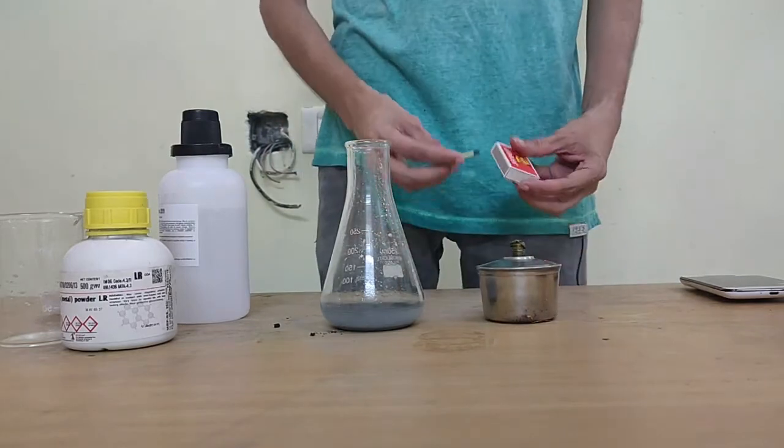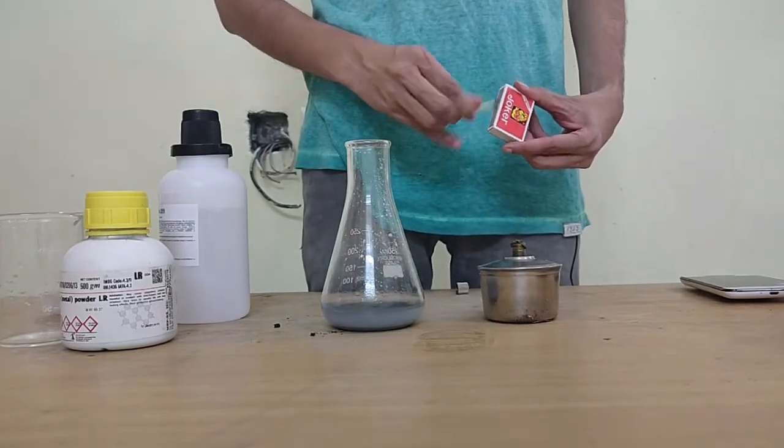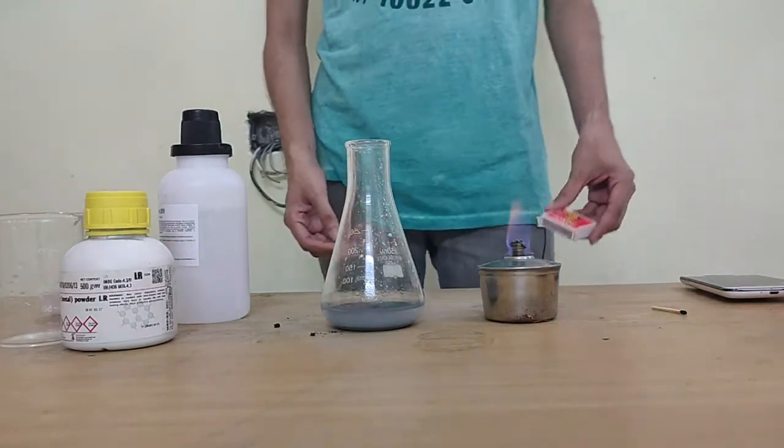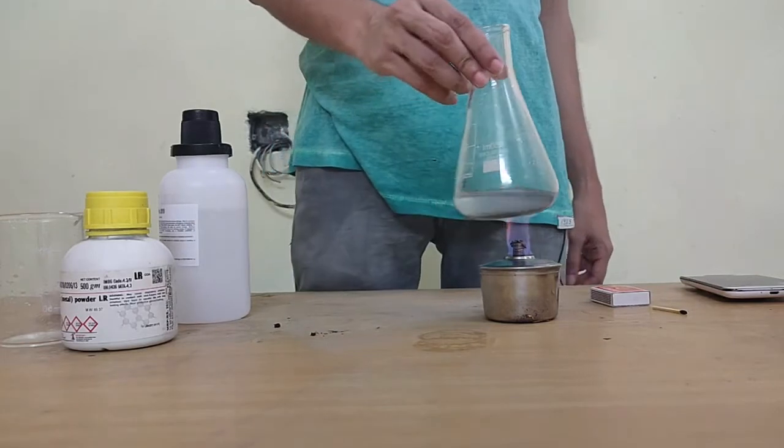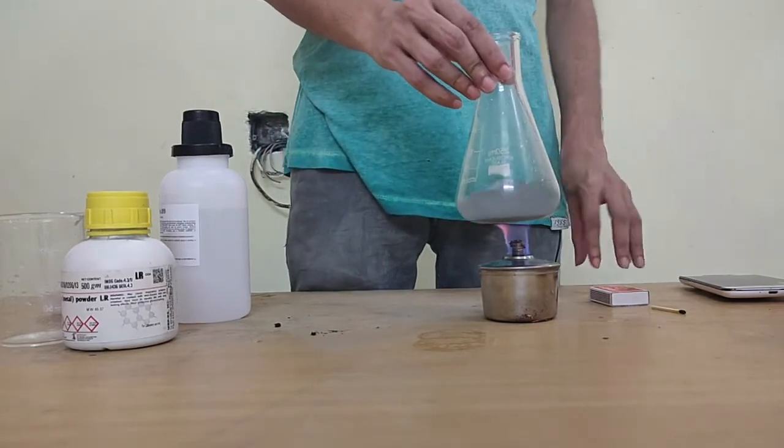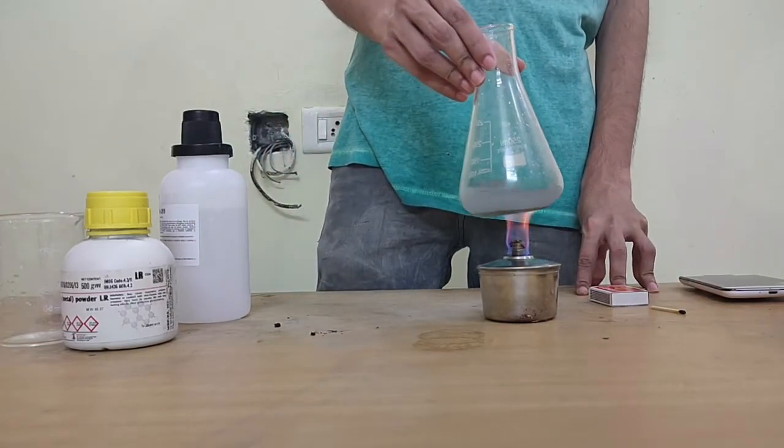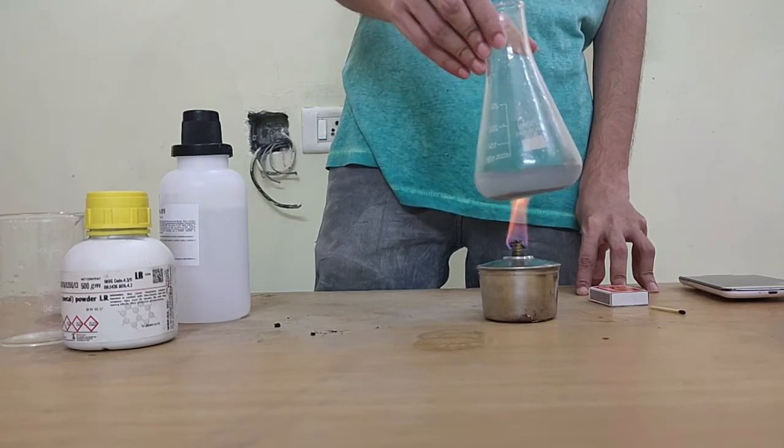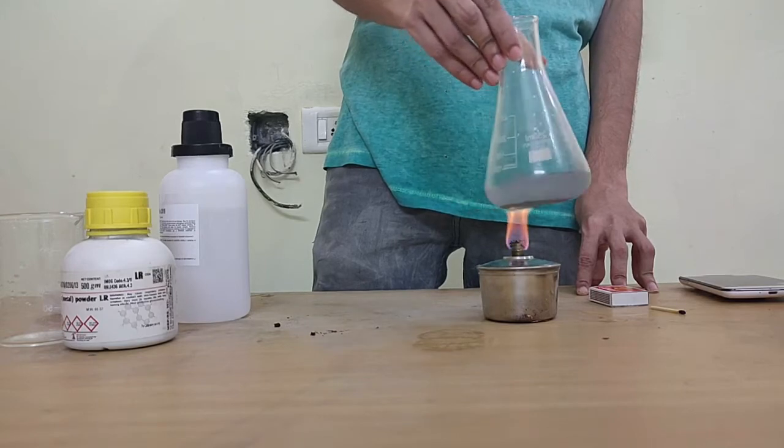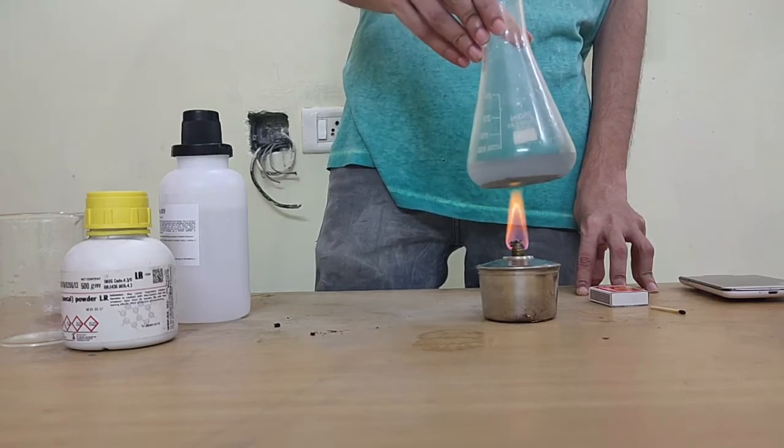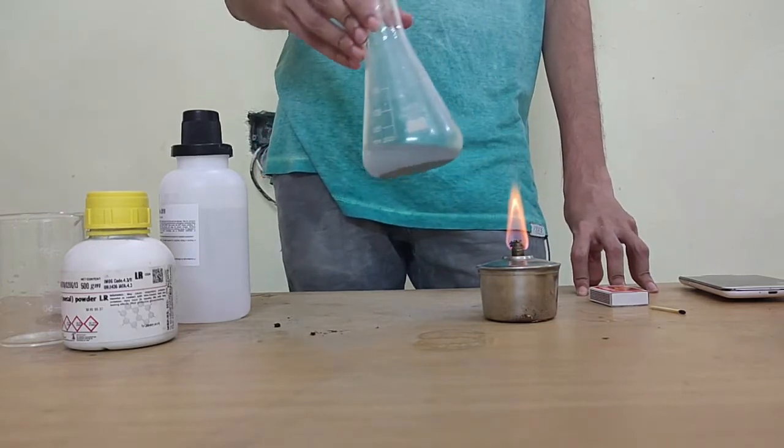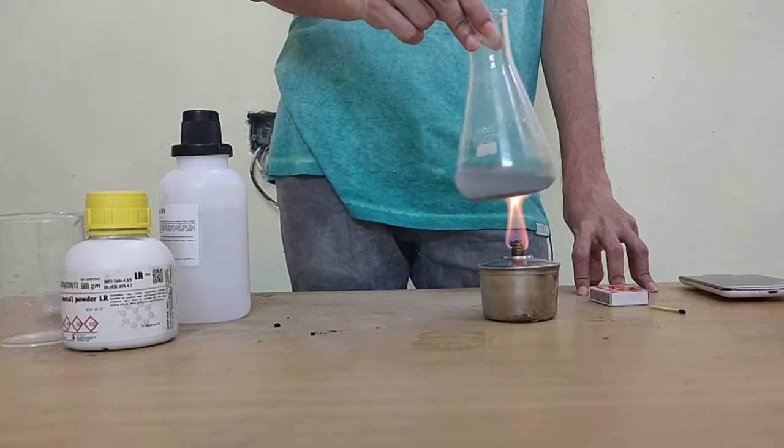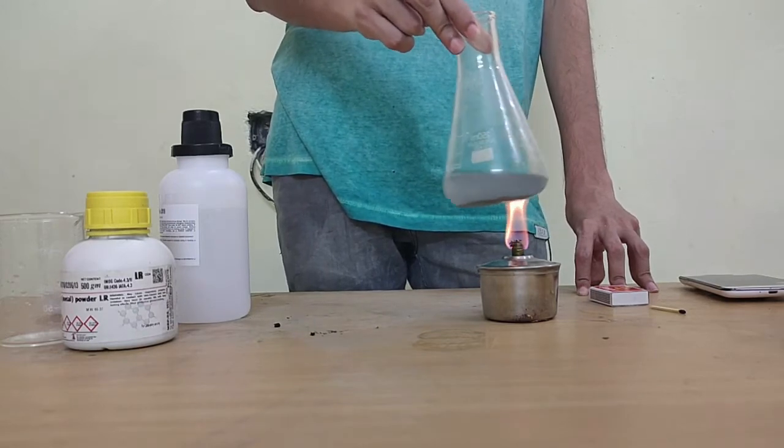Today I'll be heating this flask with the spirit lamp. Shouldn't overdo it because the flask is, after all it is glass. This is borosilicate glass by the way, you cannot just use any normal glass. Please don't try to do it on your own at home by using any regular glass. Borosilicate glass is heat resistant, it can handle heat, it won't crack so easily.